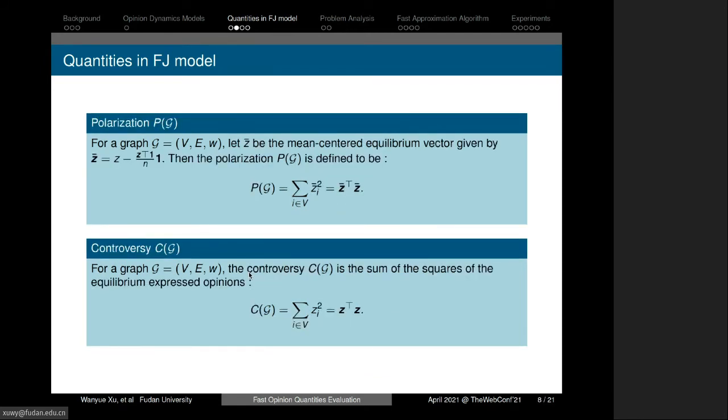If the equilibrium expressed opinions have increased divergence, we see that opinion formation dynamics are polarizing. Polarization measures how equilibrium expressed opinions diverge from their average. A similar definition is controversy, which quantifies how much the expressed opinion varies across individuals in the whole graph. Controversy is calculated by the sum of the squares of the equilibrium expressed opinions. We can find that controversy is n times the polarization.